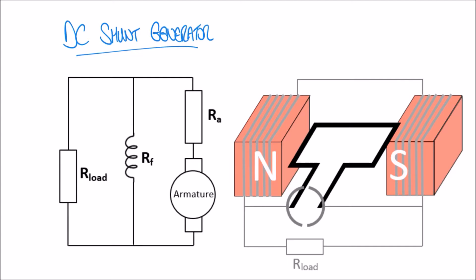Looking at the diagram on the right-hand side, we can see our armature, which rotates and produces an induced current that flows through the circuit. In parallel with the armature we have our field windings, and connected to both of these we have our load resistor.